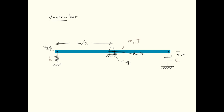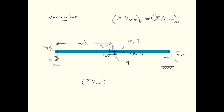If O is the center of rotation, according to D'Alembert's principle the resultant of external moments at point O is equal to the inertia moment at point O. Because the center of gravity is at point O, the displacement of the center of gravity is zero. Therefore the inertia moment at point O is J multiplied by theta double dot, the angular acceleration. Now where does the external moment come from?